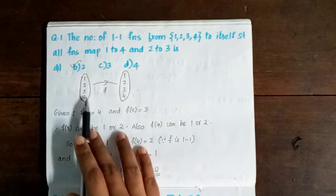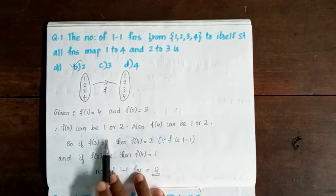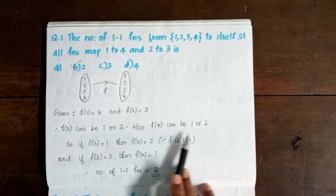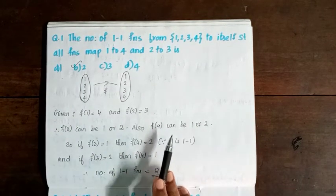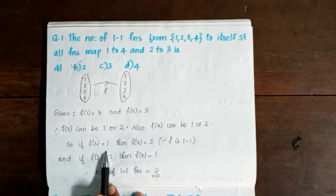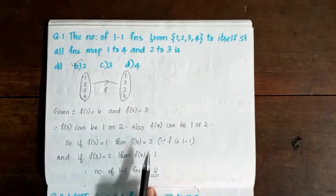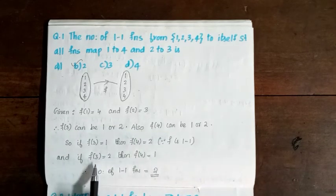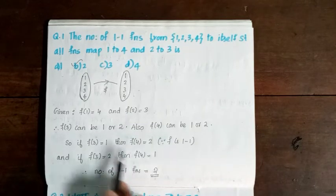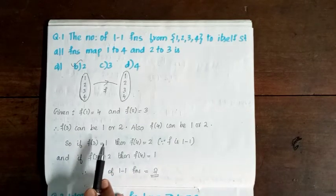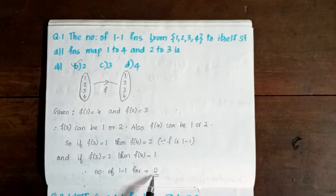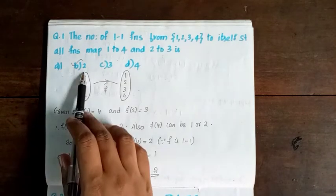So for f(3), it can be 1 or 2, and similarly f(4) takes the remaining value. We have two cases: Case 1: f(3)=1 and f(4)=2. Case 2: f(3)=2 and f(4)=1. In both cases f(1)=4 and f(2)=3. So the number of 1-1 functions is equal to 2. Option B is correct.